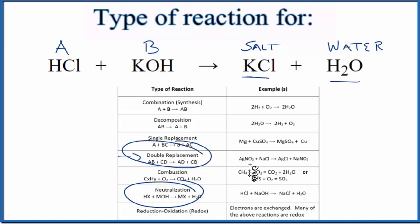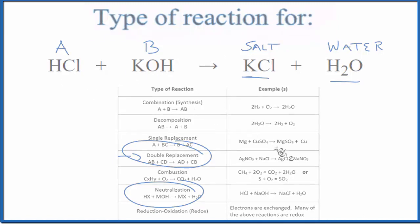So it can be two types of reactions. One reaction can be categorized as two types. This is Dr. B with the type of reaction for HCl plus KOH. That's hydrochloric acid plus potassium hydroxide. Thanks for watching.